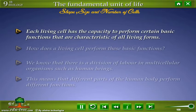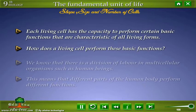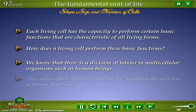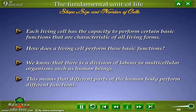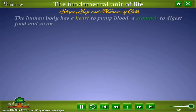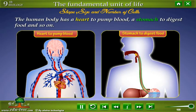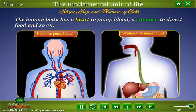Each living cell has the capacity to perform certain basic functions that are characteristic of all living forms. We know that there is a division of labour in multicellular organisms such as human beings. This means that different parts of the human body perform different functions — the human body has a heart to pump blood, a stomach to digest food, and so on.